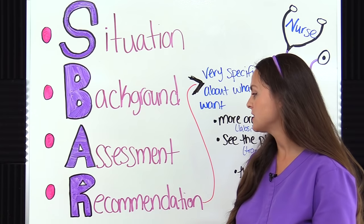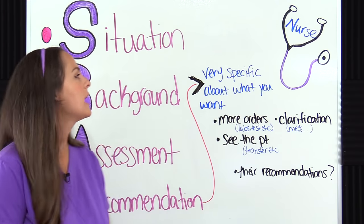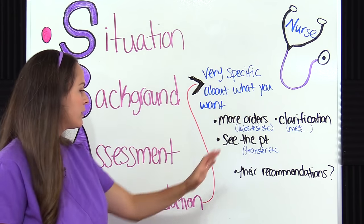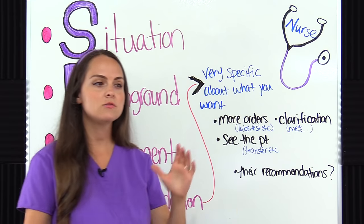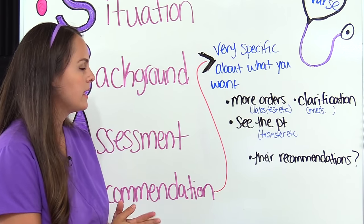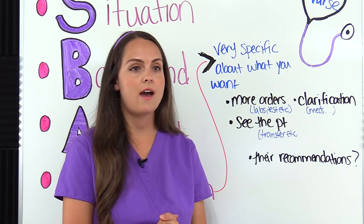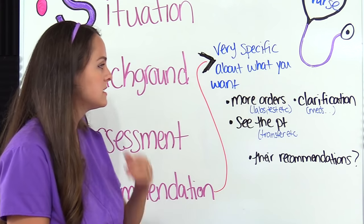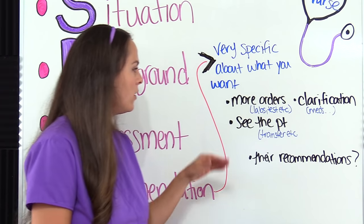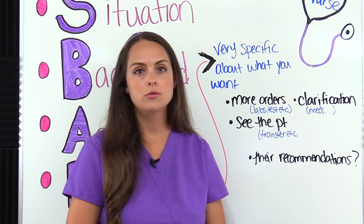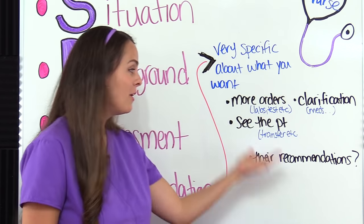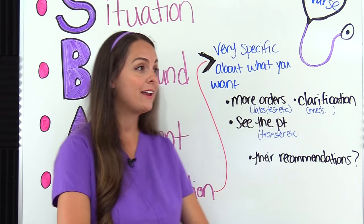Lastly, we wrap up the conversation with Recommendations. This is the part where you communicate to the listener what you specifically want or need for that patient. You've laid the framework with your Situation, Background, and Assessment, and now you specifically communicate what you need done for this patient. This can be anything — more orders, additional lab work or testing, a clarification on a medication order, having the provider see the patient, or transferring the patient to a higher level of care. Or if you don't know what to ask for, you can ask them what they recommend based on everything you've told them.